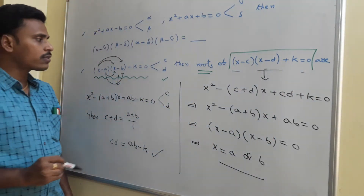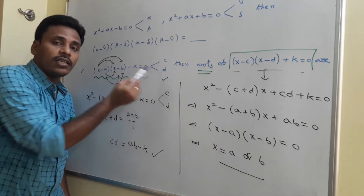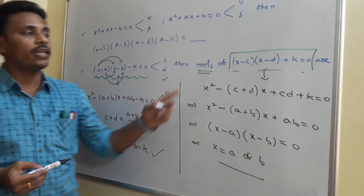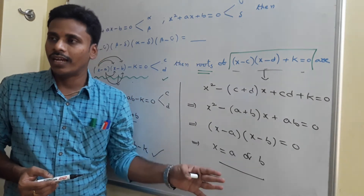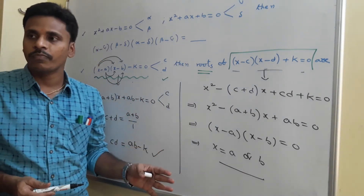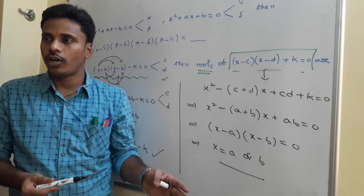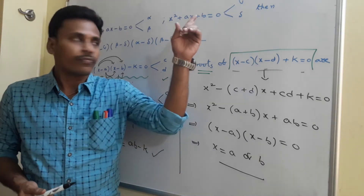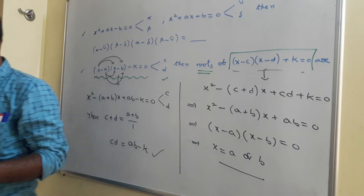So for the first equation the roots are c, d, and for the second equation the roots are a, b. This is the first problem of today's class. Take a screenshot and then I will give the explanation for the other one.